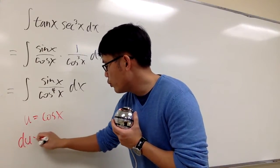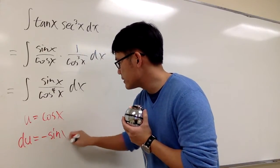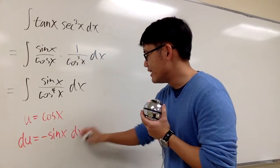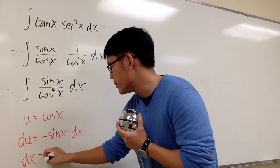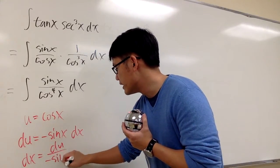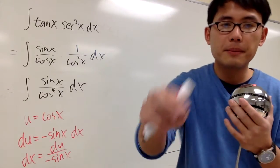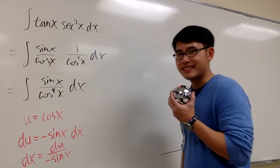And you will see that du will be the same as negative sine x, dx. And then, of course, we'll get dx by itself, dx will be du over negative sine x. Well, it's good, you guys can see that, perfect.